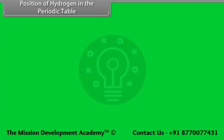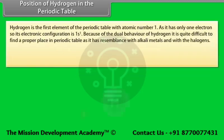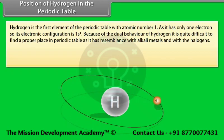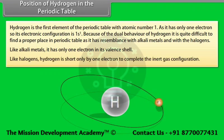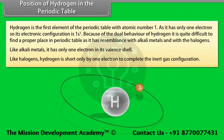Hydrogen is the first element of the periodic table with atomic number 1. As it has only one electron, its electronic configuration is 1s¹. Because of the dual behavior of hydrogen, it is quite difficult to find a proper place in the periodic table, as it has resemblance with alkali metals and with the halogens. Like alkali metals, it has only one electron in its valence shell. Like halogens, hydrogen is short by only one electron to complete the inert gas configuration.